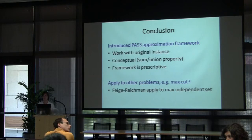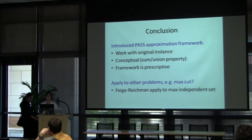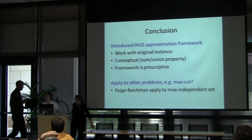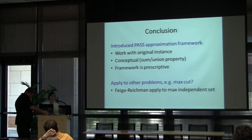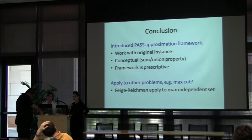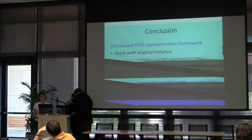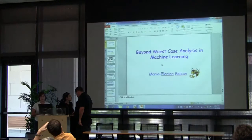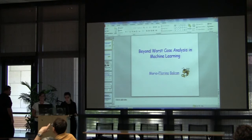Q: You said it's prescriptive once you pick the signature, but how do you choose the right signature — is that more art than science? A: It's definitely sensitive to the particular combinatorial problem. You think about what intuitively makes the problem easy and try to encode that into a signature. For max independent set, the degree of vertices in the solution tells you how easy approximation is, so the signature captures degrees of vertices in the optimal solution. But yes, choosing the signature is more art than science.